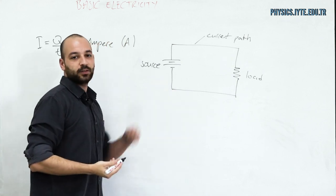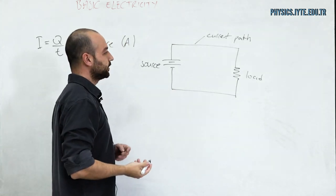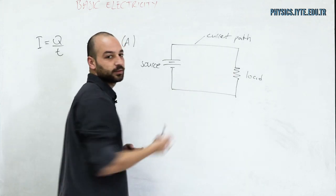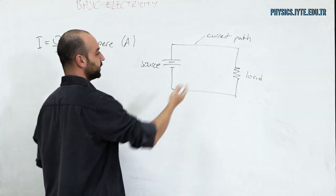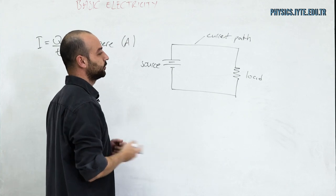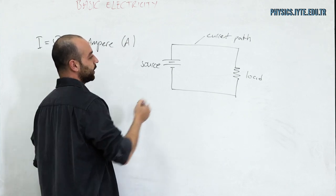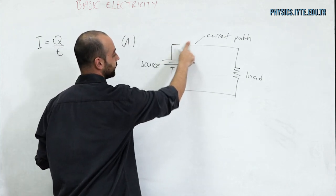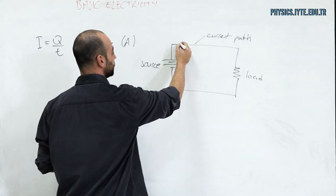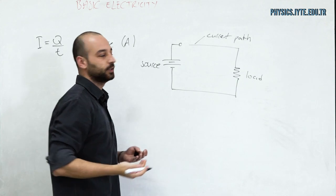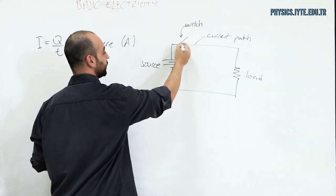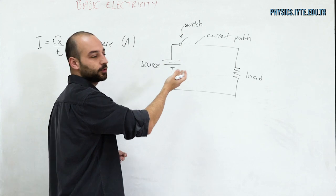The current path is a conductor that connects electrical circuit elements. If the current path is complete, it is a closed circuit. If the path is broken, it is an open circuit. To create open or closed circuits we use a switch device. If drawn open, it represents an open circuit; if drawn closed, it is a closed circuit.